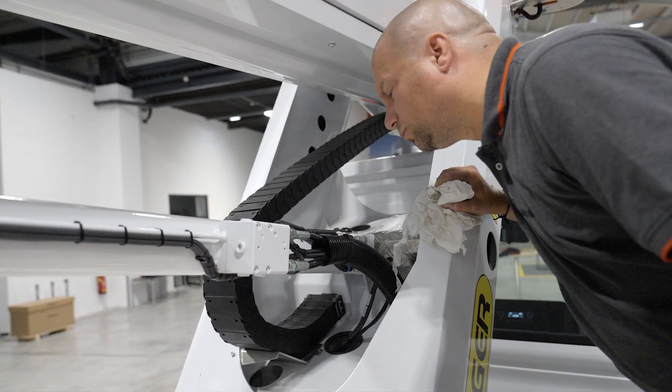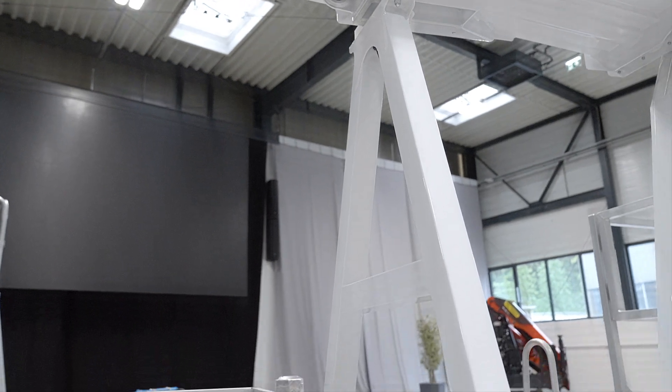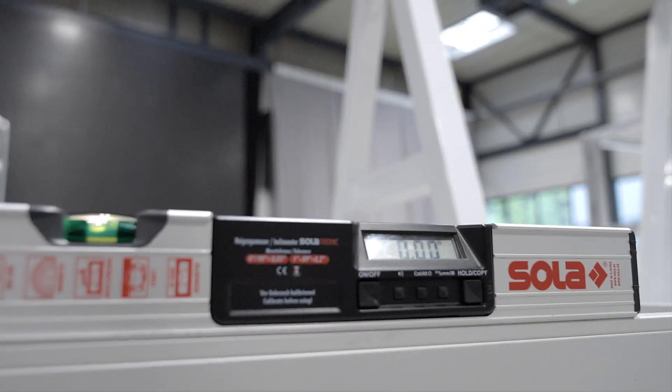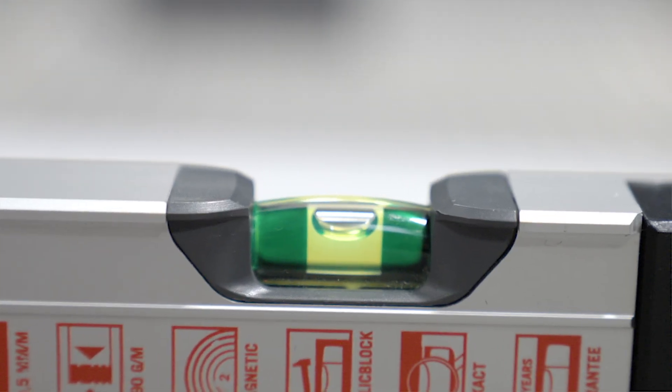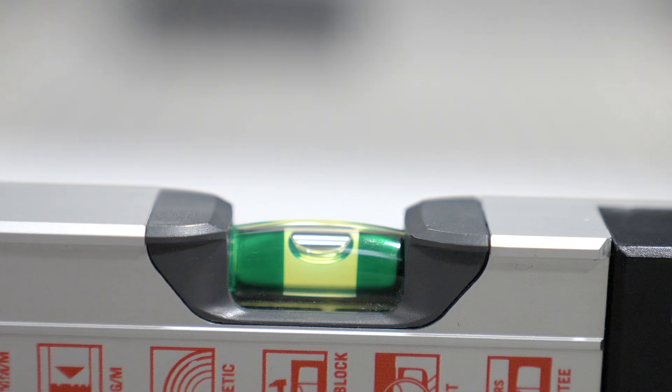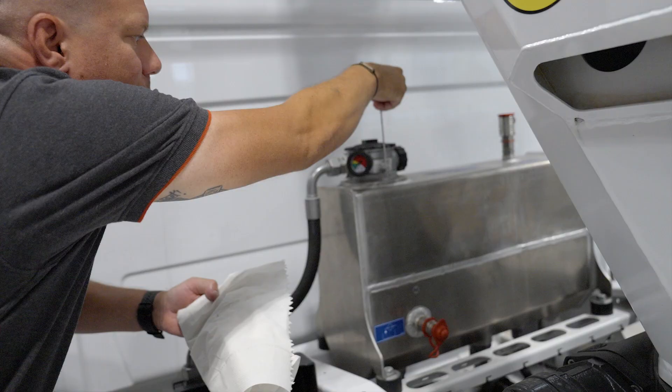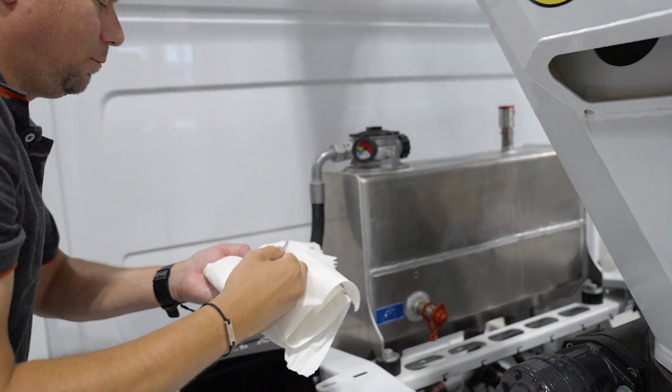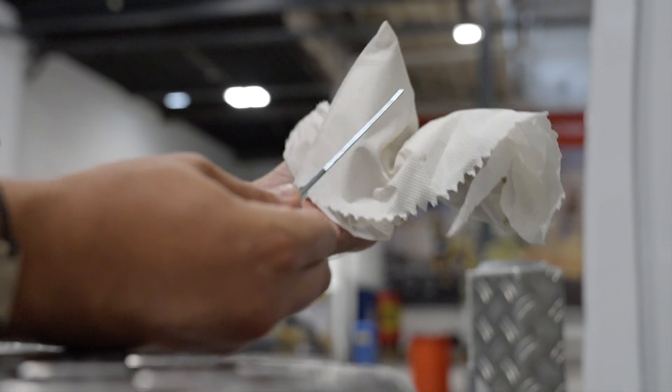To check the hydraulic oil level correctly, the device must be in the transport position and the vehicle on a flat surface. The hydraulic oil level must be between the minimum and maximum markings.